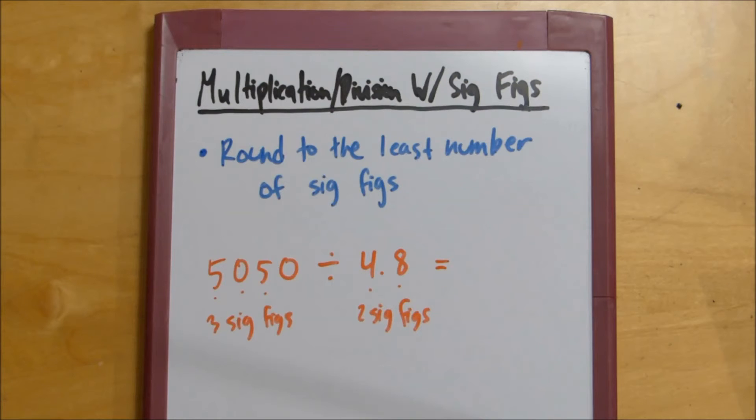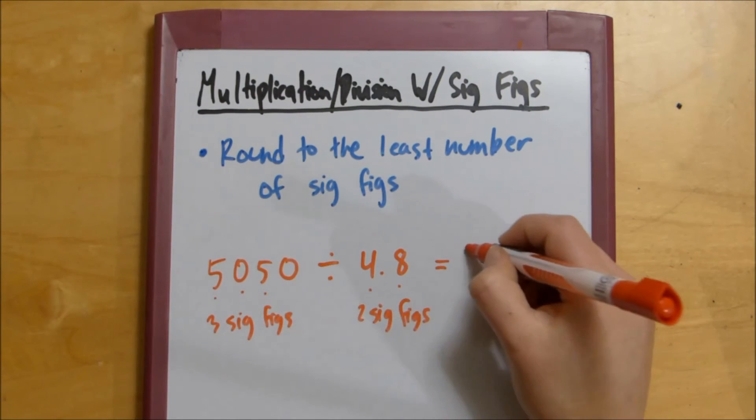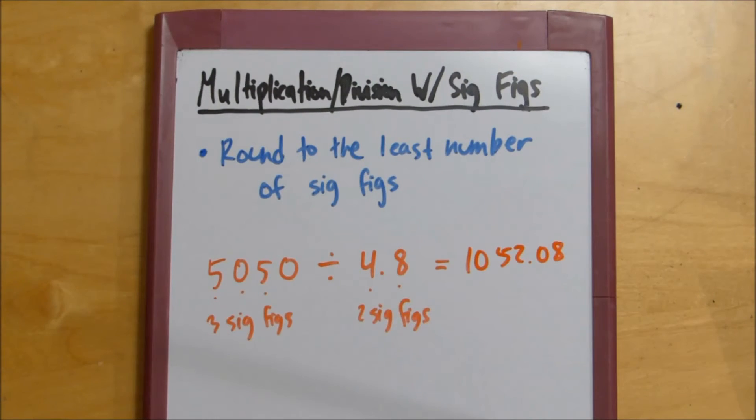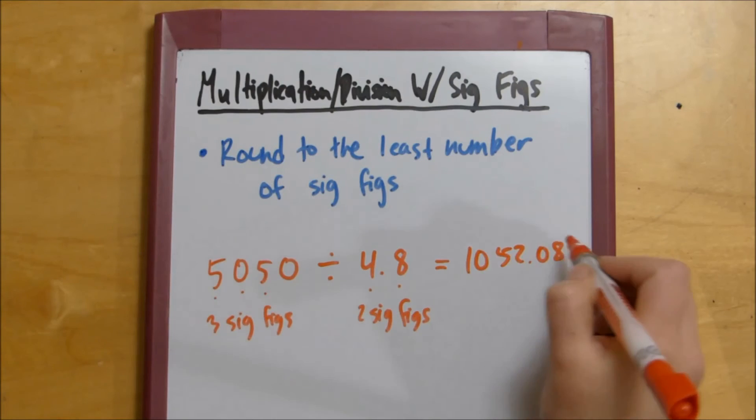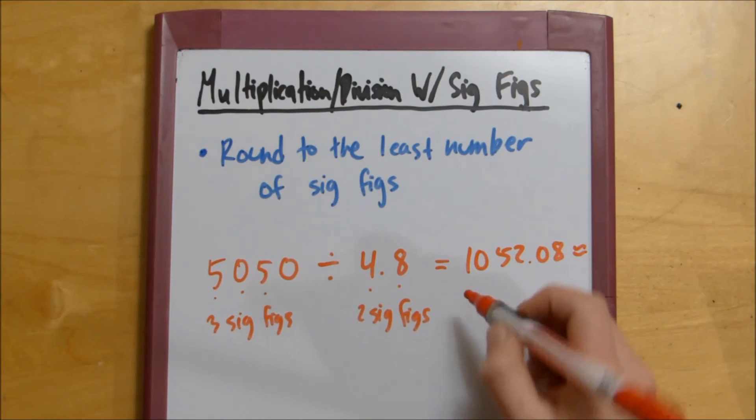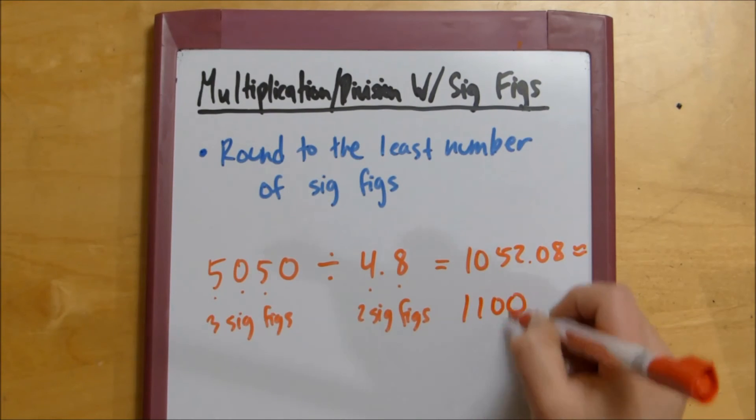Plug this into our calculators and we end up getting 1,052.08. We want 2 sig figs and I think, in my opinion, the best way to achieve this 2 sig fig number is by rounding up to 1,100. We've got 1, 2, 2 sig figs, so our answer is good to go.